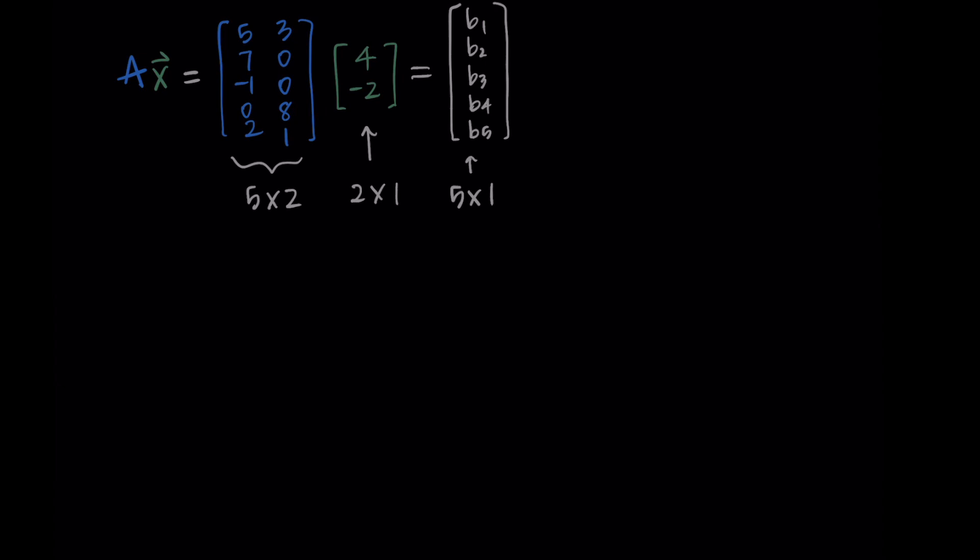So to do the multiplication we're going to take the first column of A and multiply it by 4. So the first column of A times 4 and then the second column of A and multiply it by negative 2. Second vector of A times negative 2 and we add those things together. So the first vector times 4 I'm just going to multiply all the components by 4. I get 20, 28, 8, negative 4, 0, and 8.